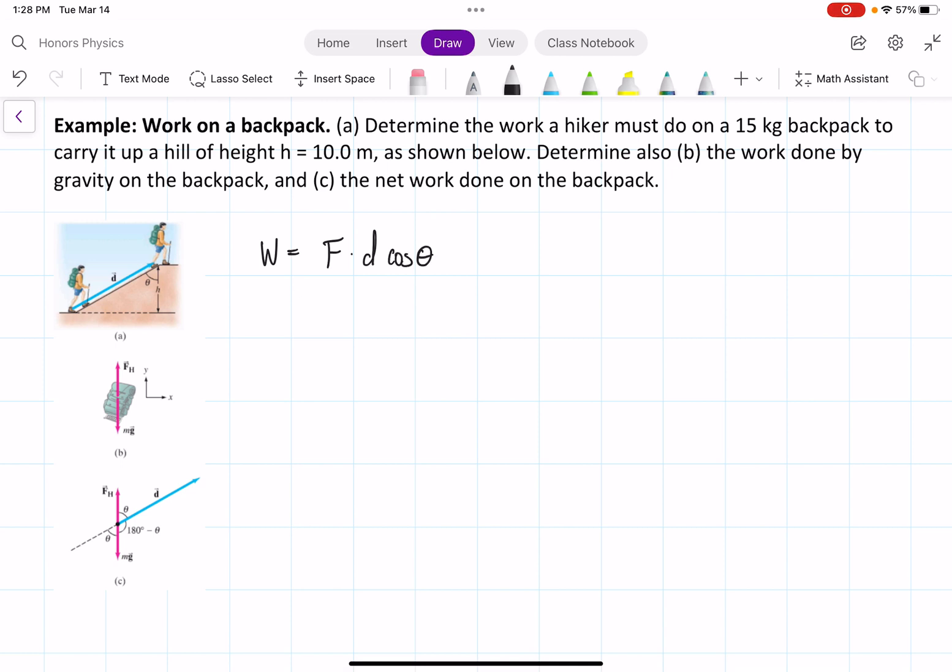But if we look at this, we don't have anything about theta, we have the height. So if you look at this picture right here, we know that d cosine theta is going to be equal to the height from trig. We're just breaking apart the vector, and we know that the height component, or the vertical component, is cosine theta times d.